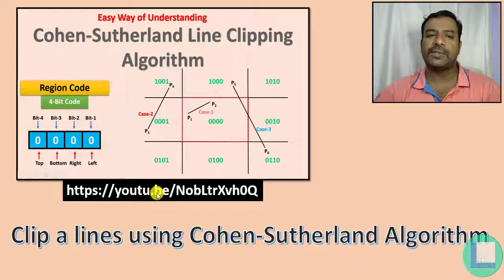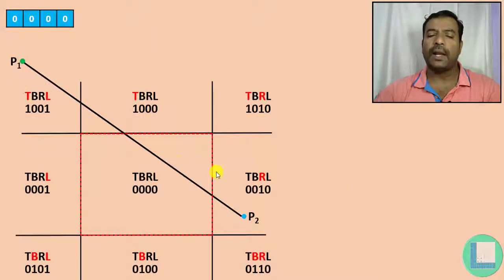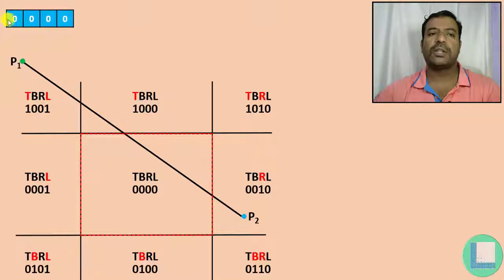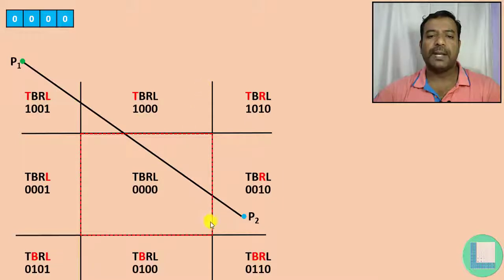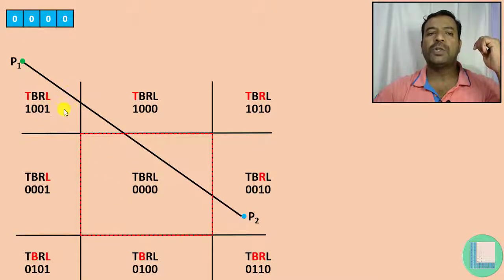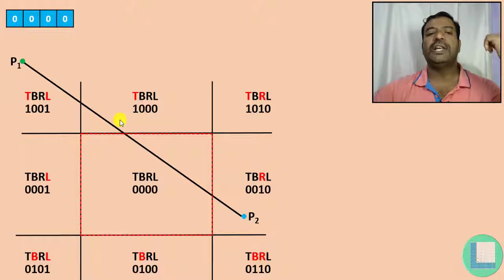I'll be putting the link in the description as well. Briefly, in this algorithm we need a line and a clip area which is a rectangle or square. Depending on where the line is, I form four bits for each point — top, bottom, right, and left — indicating which region the point belongs to.